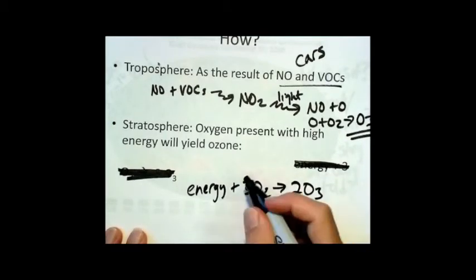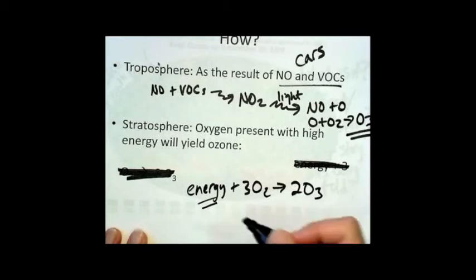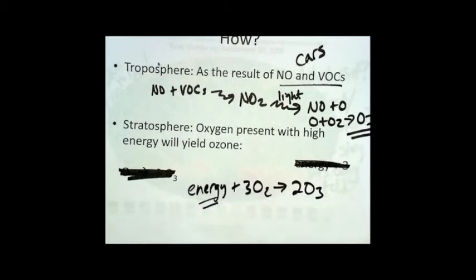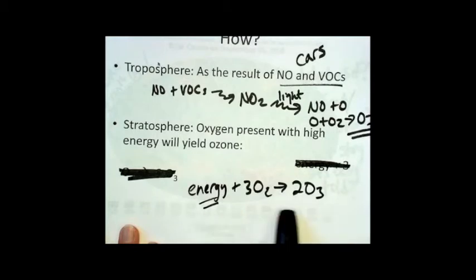Now what kind of high energy do we need for this to happen? Well, if there's a lightning strike, there's a lot of energy around the lightning strike, and around lightning strikes we produce ozone, and that's down in the troposphere, high in the troposphere and low in the troposphere, both.